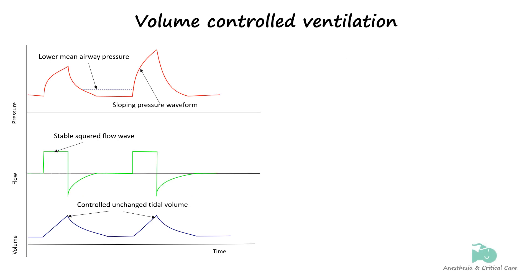In volume-controlled ventilation, the tidal volume is the independent variable and is kept constant. As volume and flow are linked, volume control modes are generally constant flow modes — that is, the ventilator delivers a constant flow and stops when the desired volume is achieved. Because pressure is not controlled or regulated in any way, the pressure waveform takes a parabolic sloping shape as the lungs distend during a breath. The pressure waveform is highly variable during volume control ventilation, changing shape depending on lung compliance and airway resistance, and as a result, it offers a significant amount of information. Interpretation of the pressure waveform is discussed elsewhere.